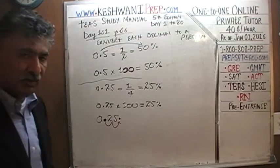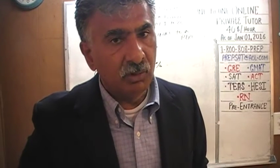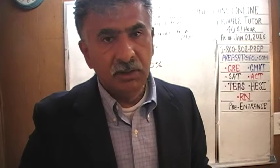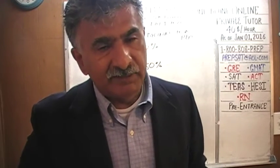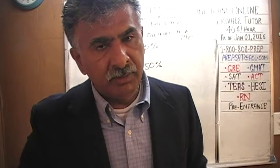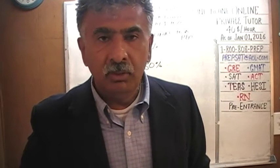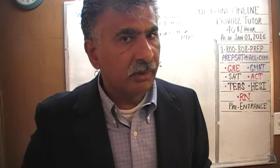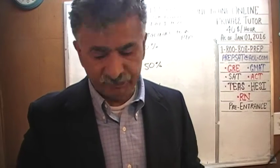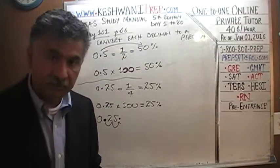To summarize: whatever decimal is given to us, if we need to convert it into a percentage, simply multiply by 100 — and by doing so, move the decimal to the right two spots. That's it. It's as simple as that.